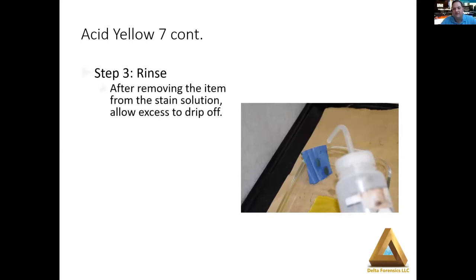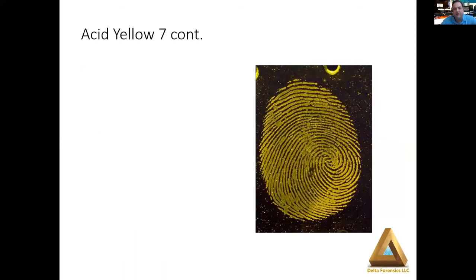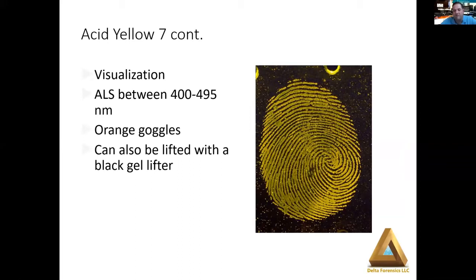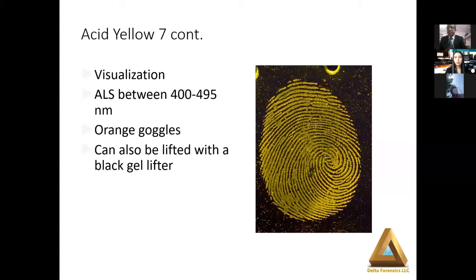The final step is rinsing the excess dye. There are two versions: if you mix the acid yellow 7 yourself, there's a formulation for the rinse; or simply distilled water can be used, which is more readily available and what we use with our pre-made versions — both will work. The final visualization is fluorescence between 400 and 495 nanometers using an orange goggle or orange barrier filter. Acid yellow 7 can also be lifted — using a black gel lift this time. When we have a fluorescent yellow impression on a dark background, we achieve a wonderful level of contrast. A fluorescent impression on a white gel lift would not give us as strong a fluorescence to the background.